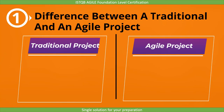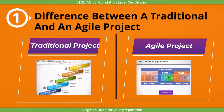First of all, a tester on an Agile project will work differently than one working on a traditional project. The main difference is that in traditional development methodologies, the sequence of phases in which the project is developed is linear, whereas in Agile, it is iterative. To understand this point, I will explain a linear model and an iterative model.